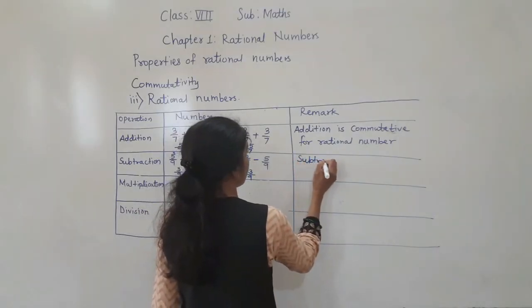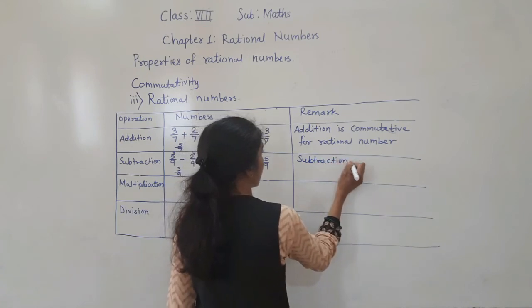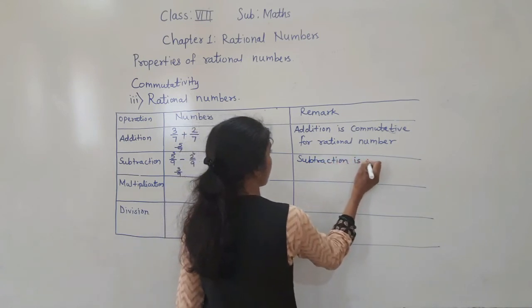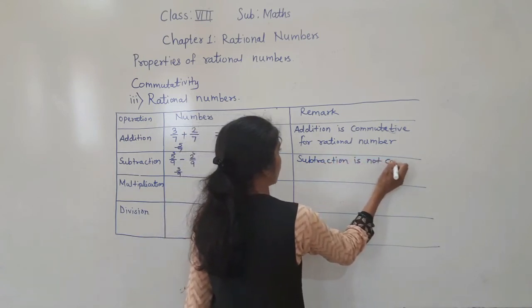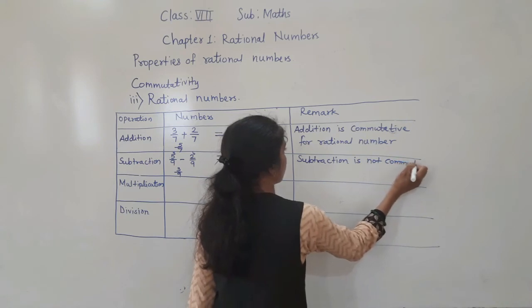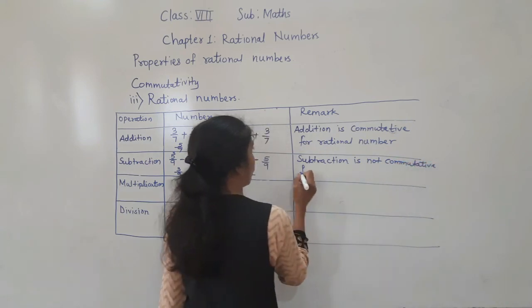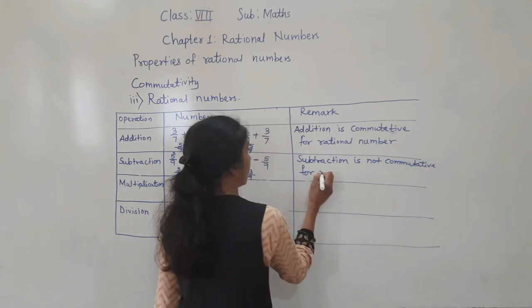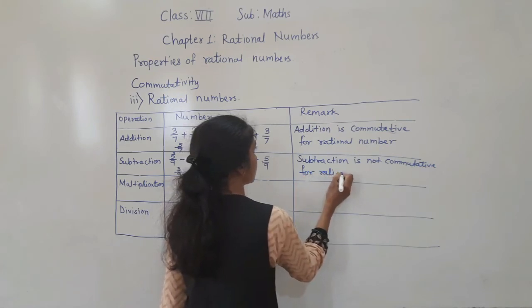So subtraction is not commutative for rational numbers.